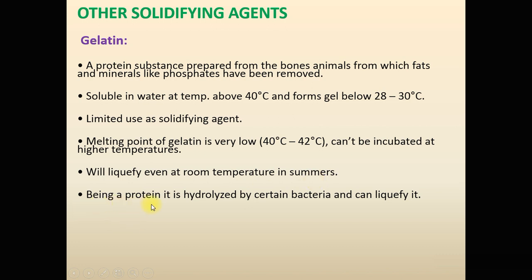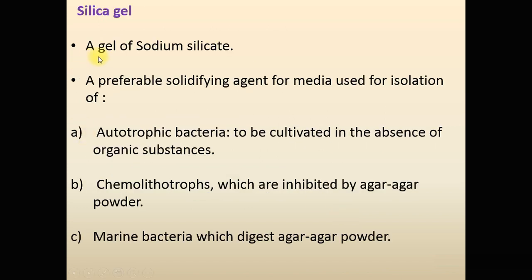Being a protein, gelatin is also hydrolyzed by certain bacteria, which can liquefy it, making it inappropriate as a solidifying agent. Silica gel — a gel of sodium silicate — can also be used. It is a preferable solidifying agent when the medium is used for isolation of autotrophic bacteria cultivated in the absence of organic substances, for isolation of chemolithotrophs inhibited by agar, and for isolation of marine bacteria that digest agar powder.